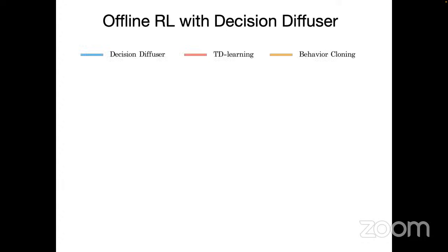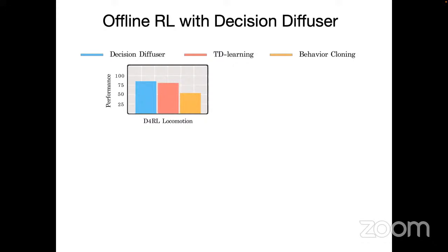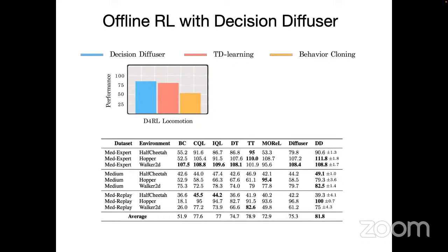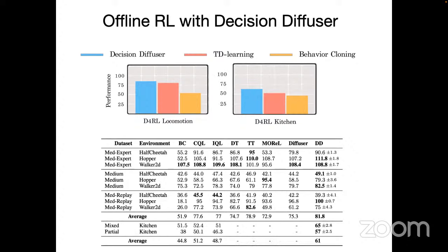This purely generative objective — with no value iteration or dynamic programming — actually performs very similarly, or slightly better than existing TD learning approaches on a variety of offline RL benchmarks. Our numbers (DD) are shown in the right column and histogram. On more complicated tasks like D4RL Kitchen, our approach substantially outperforms existing offline RL methods.